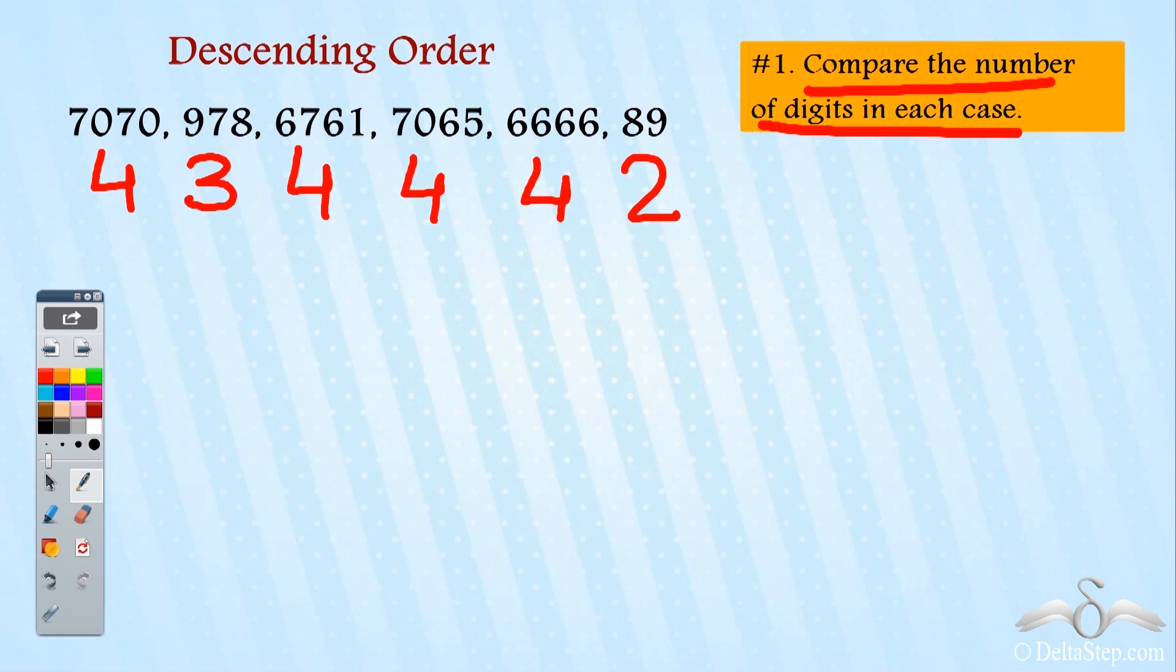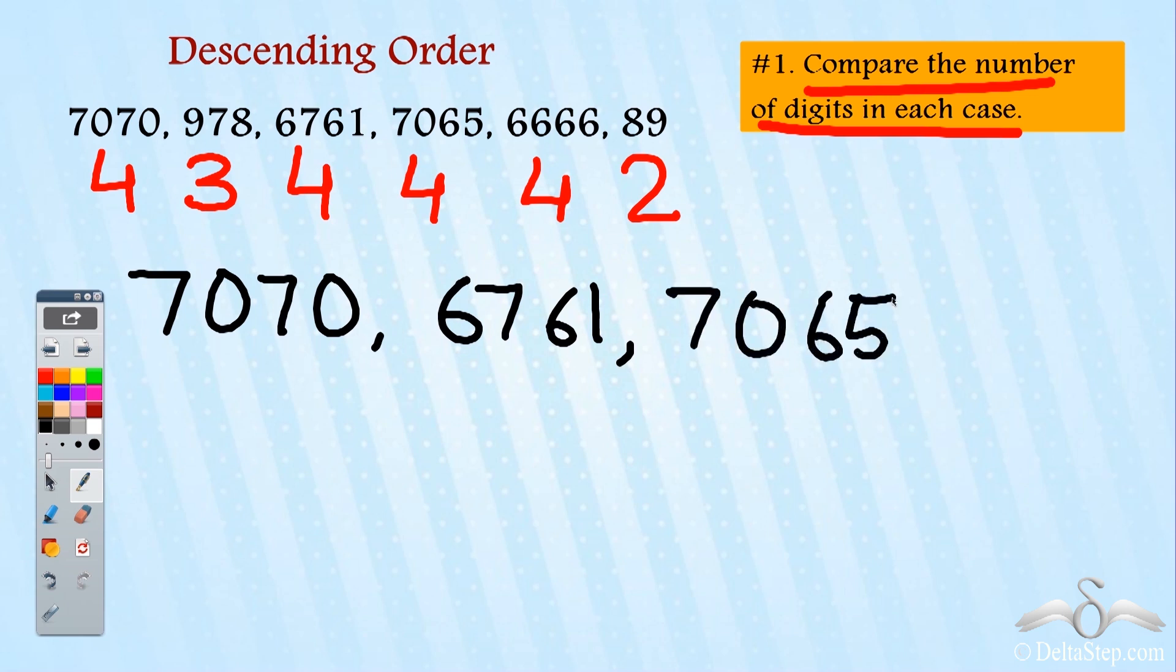All the four digit numbers will be bigger than this three digit number and the two digit number. So let us first write all the four digit numbers: 7070, then 6761, then 7065, and then 6666, then the three digit number 978, and then 89.